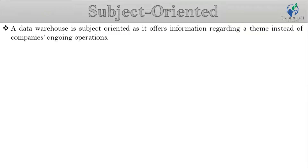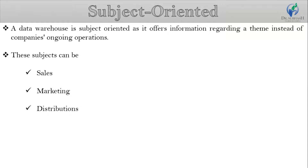The first characteristic is subject-oriented. A data warehouse is subject-oriented as it offers information regarding a theme instead of a company's ongoing operations. The subjects can be in sales, marketing, distributions, etc. A data warehouse never focuses on the ongoing operations; instead it puts emphasis on modeling and analysis of data for decision-making. It also provides a simple and concise view around a specific subject by excluding data not helpful to support the decision process.